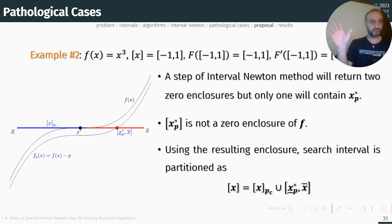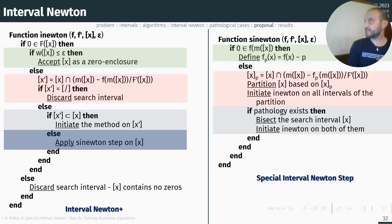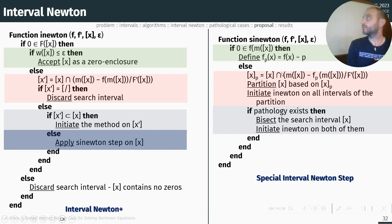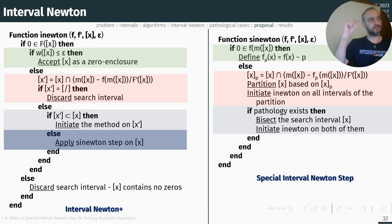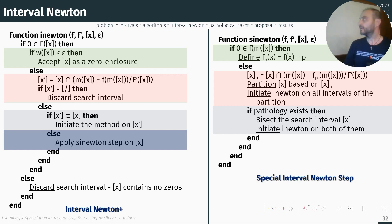Similarly we have the same approach for example two. The proposed algorithm has essentially replaced the initial bisection scheme with this function, which applies interval Newton on the new perturbed function once when the problem occurs, and then the resulting intervals are sent again to the initial algorithm to be processed.